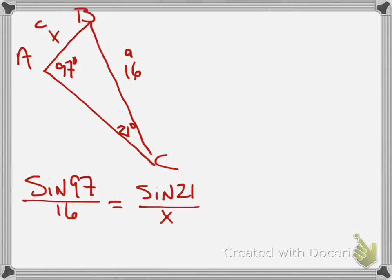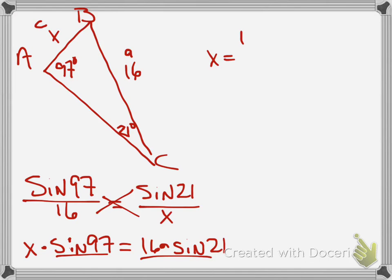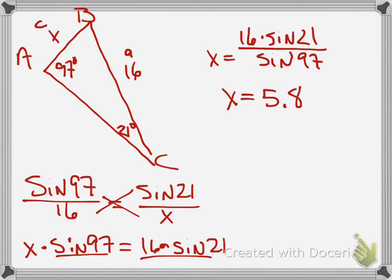Now, how do you solve something like this? Do we cross multiply? Yes, you do. So you would say something like x times sine of 97 is equal to 16 times sine of 21. Okay, and then all you got to do is divide those by sine of 97. So you can type something like that into your calculator and press enter, and you should get an answer of about 5.8. Okay, that's all there is to it.